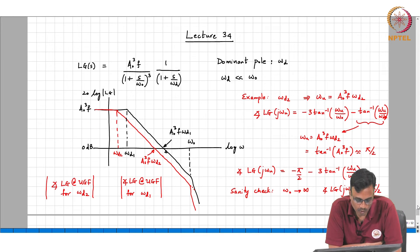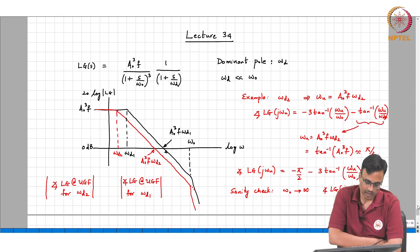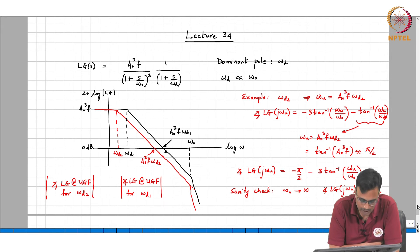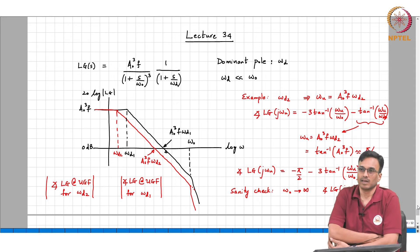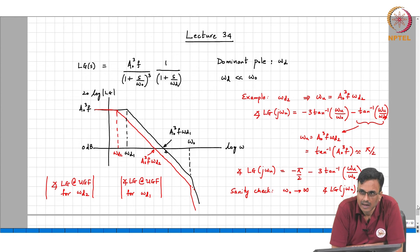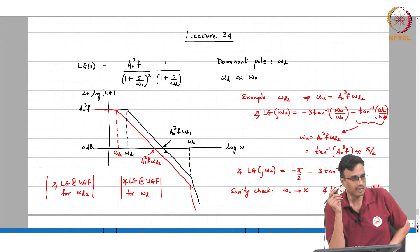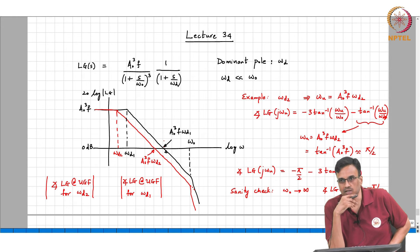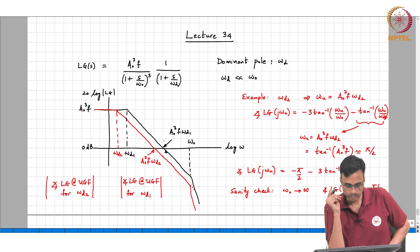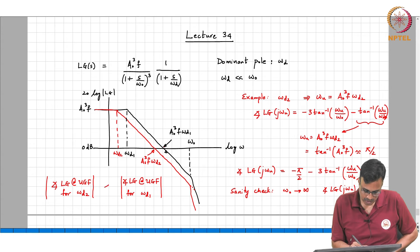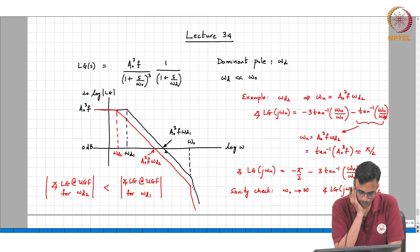Which choice of dominant pole frequency will have a larger phase lag? The angle of the loop gain at the unity gain frequency for omega-d2 versus omega-d1 — omega-d1 has the higher phase lag. Why? Because omega-d1 is greater than omega-d2, and therefore the phase shift added by the poles at omega-naught at the unity gain frequency is much higher than what you get for omega-d2. So the angle of the loop gain for omega-d2 is smaller in absolute value than for omega-d1.